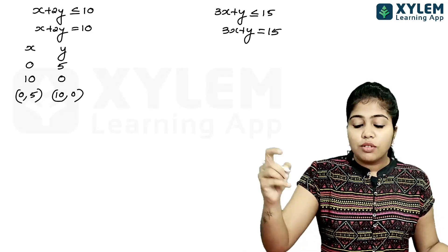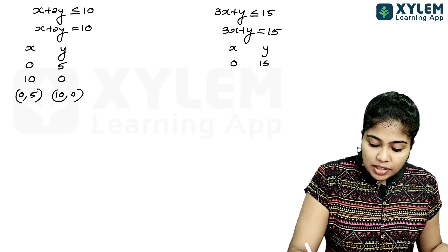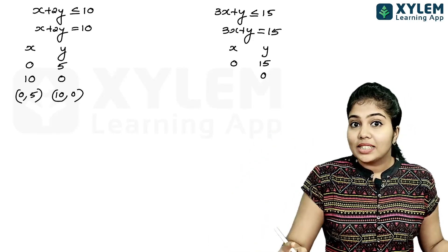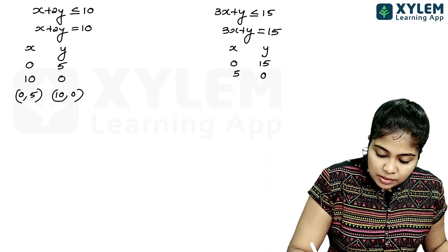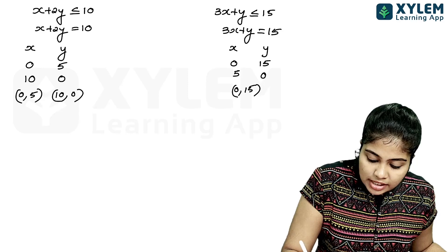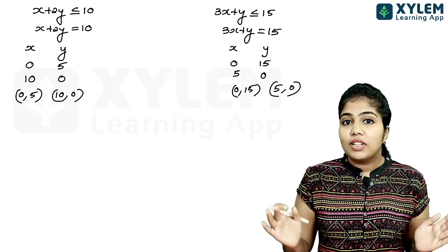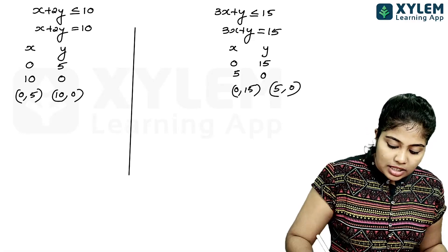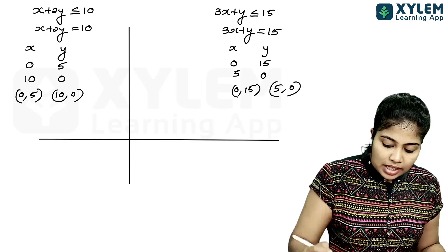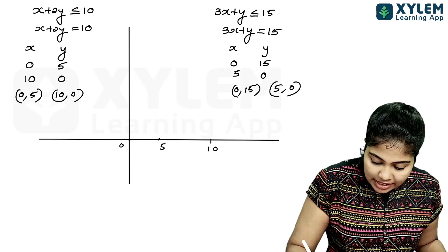For the line 3x plus y equal to 15, when x equals 0, y equals 15; when y equals 0, x equals 15 divided by 3, which is 5. So we have points: 0 and 15, and 5 and 0. We plot both lines on the graph using the x-axis and y-axis with points 0, 5, 10, 15.